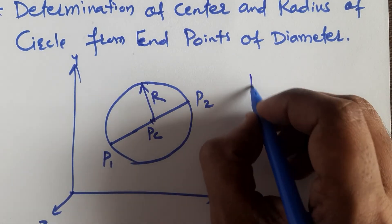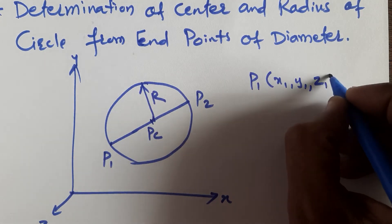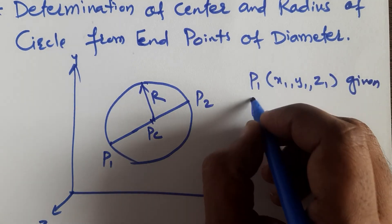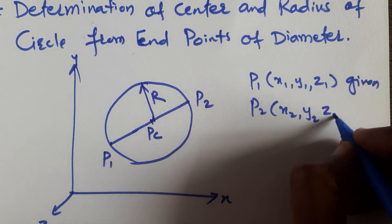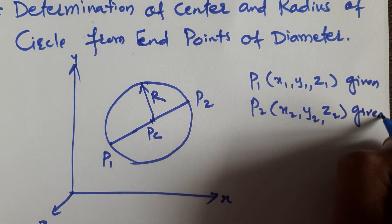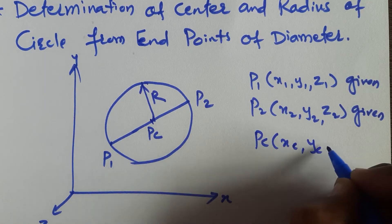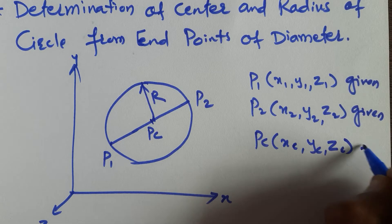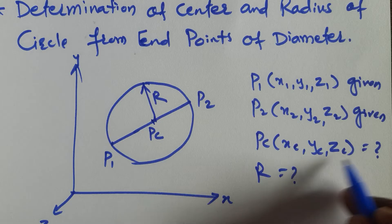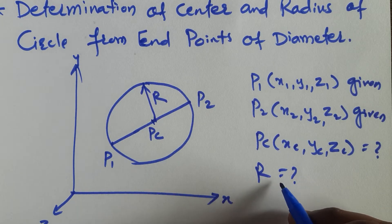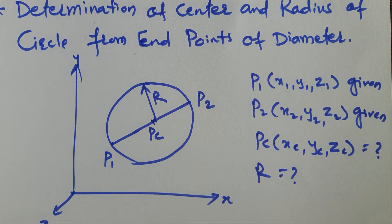So if P1 is given as (x1, y1, z1), P2 is given as (x2, y2, z2), then Pc (xc, yc, zc) we need to calculate, and R we need to find. So we need to calculate the coordinates of center and radius of the circle when P1 and P2 end points on the diameter are given.